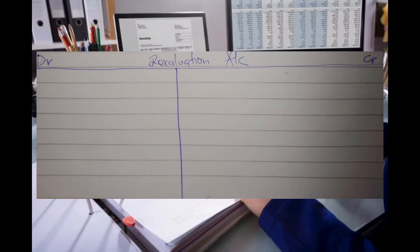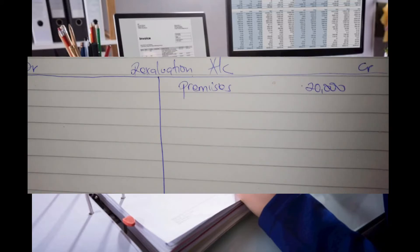We shall prepare the revaluation account as asked. The revaluation account is in a T-format with a debit side and a credit side. We start with premises. They told us premises was revalued from 100k to 120k, so there was an increase in value by 20k. In case of an increase in the value of assets, we debit the individual asset account and credit the revaluation account. So we credit the revaluation account with premises of 20k.